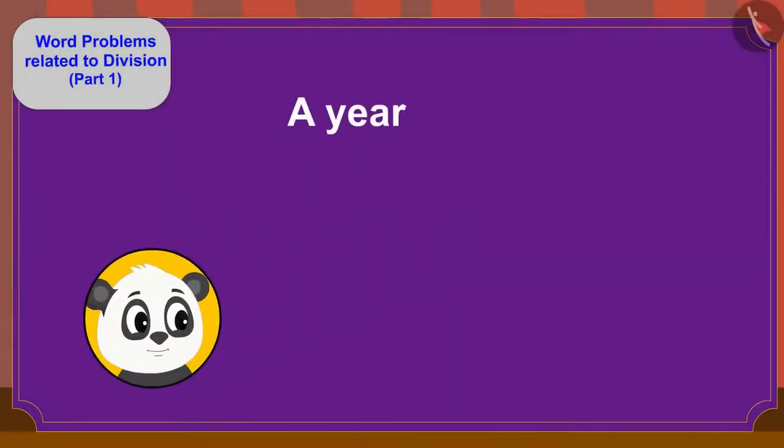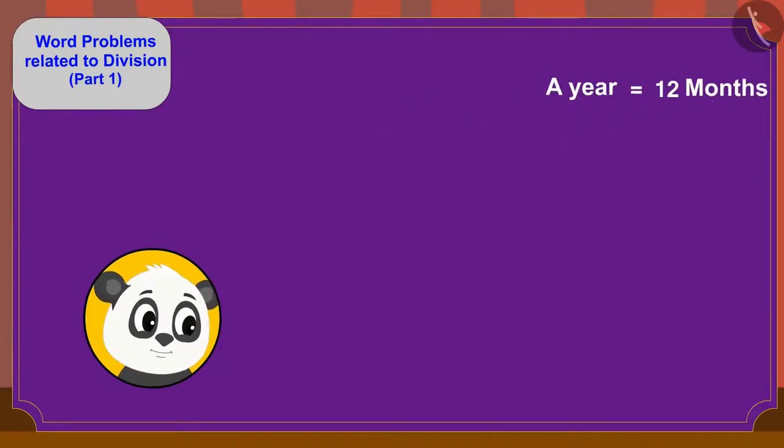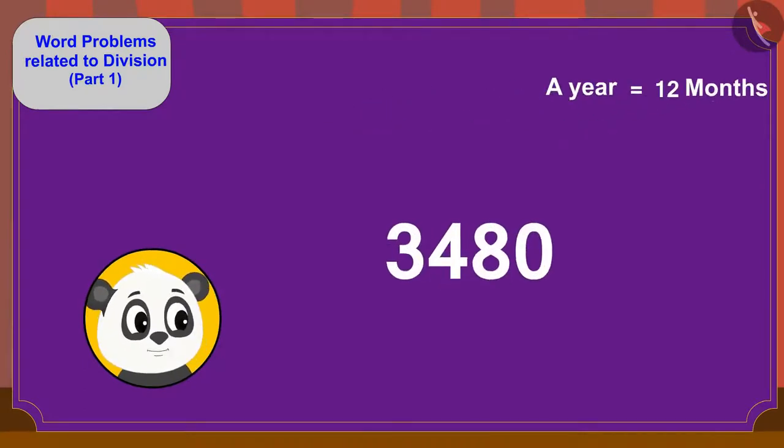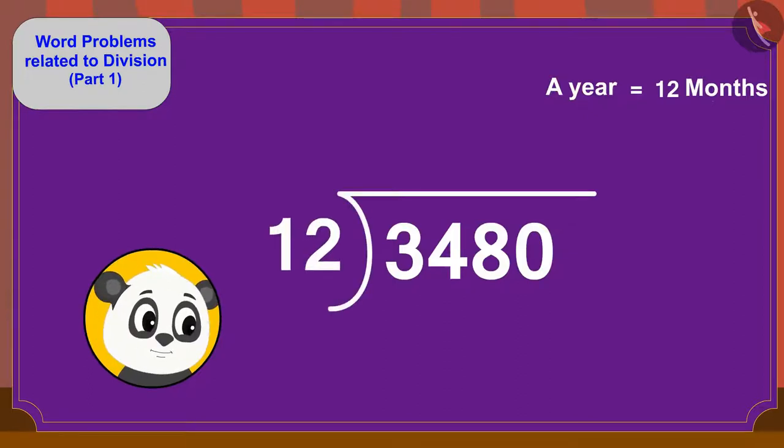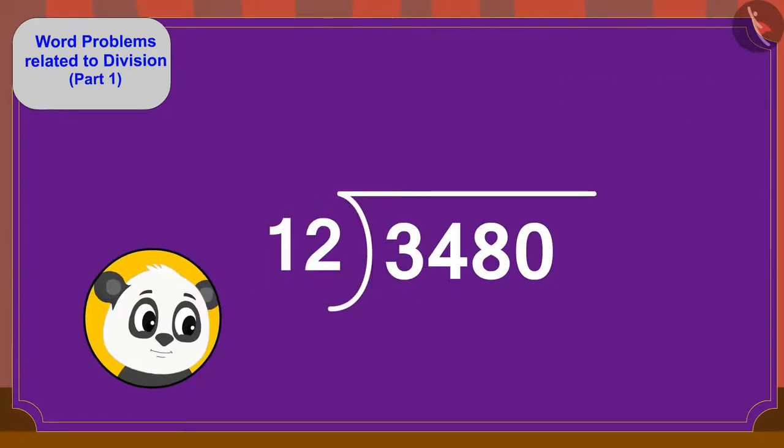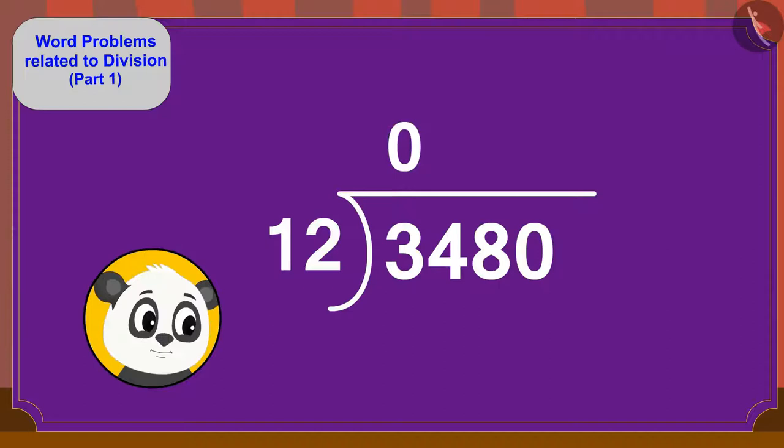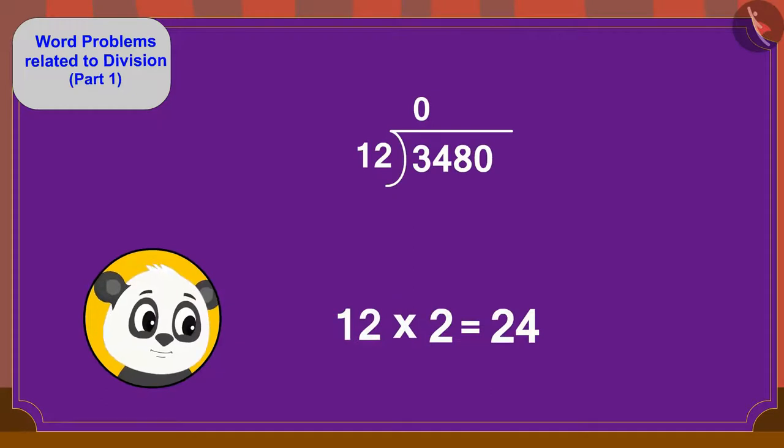A year has 12 months, therefore we will divide 3480 by 12. Can we divide 3 by 12? No, so we will write 0 up here. Now can we divide 34 by 12? Yes, 12 times 2 is 24. So here we will write 2 above and below 24.